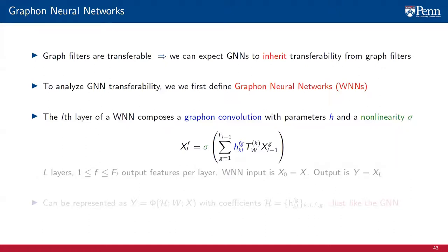The equation on the slide describes the L-th layer of a WNN with L layers and F_L output features. The H_{KLF} are its learnable weights. Recall that T_W^K is the graphon diffusion sequence of length K, defined by successive applications of the integral operator with kernel W, or graphon shift operator. The WNN input X^0 is the graphon signal X, and the WNN output Y is X^L, the output signal at the last layer of the WNN.